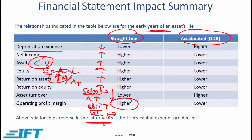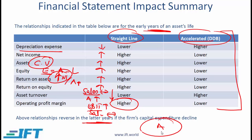These relationships will reverse in later years. What we have discussed relates to the early years of an asset's life, where depreciation expense is lower for straight-line and higher for double declining balance. As long as the firm's capital expenditures are declining — meaning it spends heavily on assets upfront — initially depreciation is higher for the accelerated method, but later it comes down relative to straight-line. If capital expenditures keep rising, we will continue to see relatively high depreciation for the accelerated method.